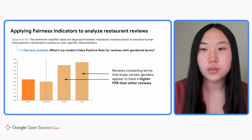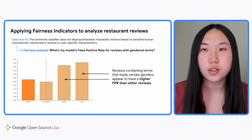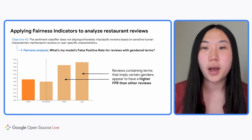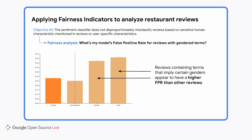Now we turn to our second objective, which is to minimize any differences in error rates — specifically false positive rates. This graph shows us that reviews containing terms implying certain genders tend to have a higher FPR, or false positive rate, than other reviews, meaning they are far more likely to be classified incorrectly as positive. When we looked at the other gender category, the confidence interval is very large, spanning from zero to 0.55, which means we don't have a good sense of what this value is. So we want to gather more data in this category.